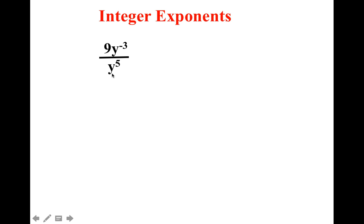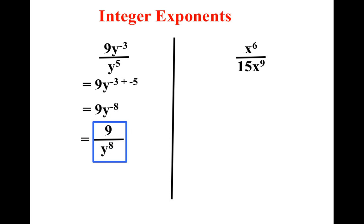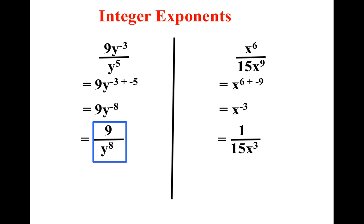The exponent only affects what it touches, so the negative 3 is only touching the y — only the y's are negative. Remember what we're doing here: I have variables being divided. My y's have the same base, so I subtract the exponents. Negative 3 minus 5, or plus negative 5, gives me y to the negative 8. The exponent only affects what it touches, so only the y's belong in the denominator. In this situation, I subtract my exponents: 6 minus 9, or 6 plus negative 9, which gets me x to the negative 3rd. Those x's are left over in the denominator, and the 15 was already in the denominator, so it stays.